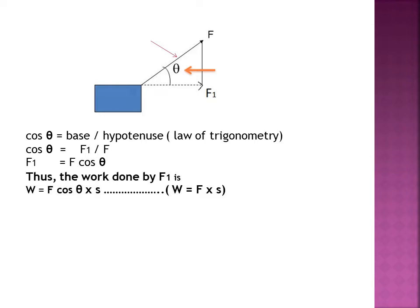Thus the work done is W = F cos theta × S. Instead of writing just F, we write F cos theta because the direction of the applied force and the direction of displacement are different. So we write W = Fs cos theta, rearranging force, displacement, and cos theta.